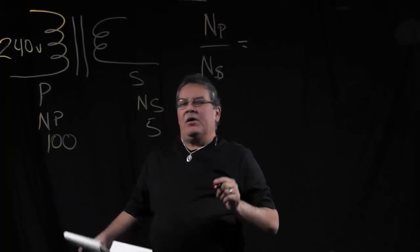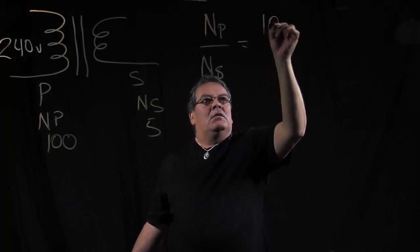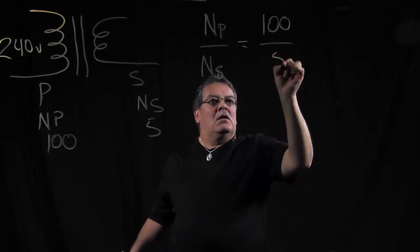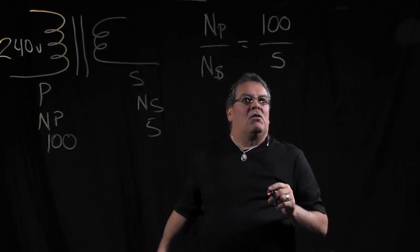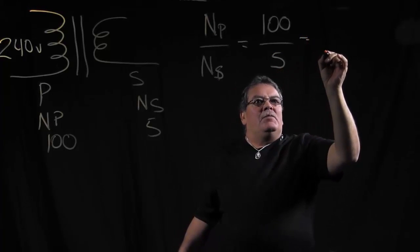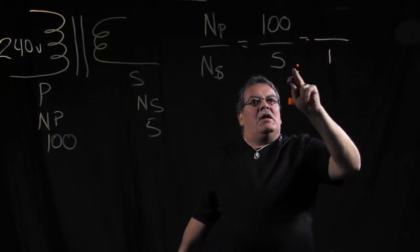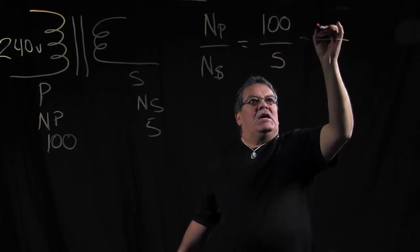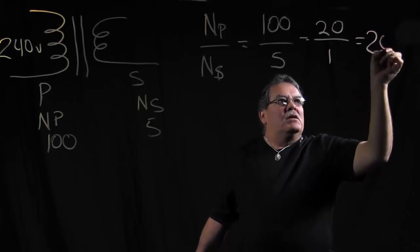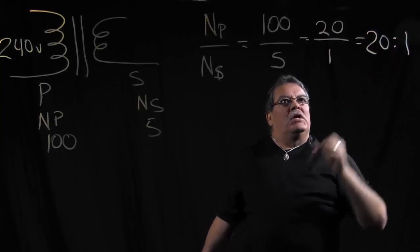OK, so our turns in the primary is 100, and our turns in the secondary is 5. So we could reduce this down. 5 goes into 5 one time, and 5 goes into 100 twenty times. So this would equal a turns ratio of 20 to 1.